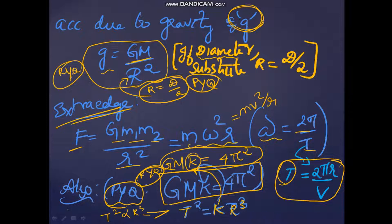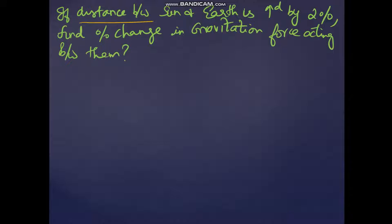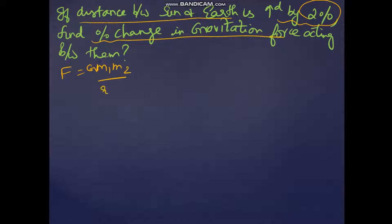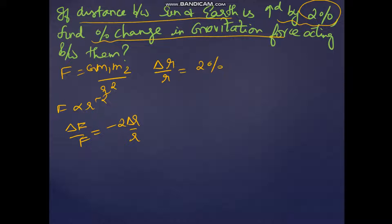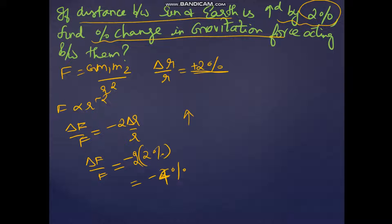Example: if the distance between the Sun and Earth is increased by 2%, find the percentage change in gravitational force. F = Gm1m2/r², so F ∝ r⁻², giving ΔF/F = −2 · (Δr/r). Here Δr/r = +2%, so ΔF/F = −2 × 2% = −4%. As the distance increases by 2%, the gravitational force decreases by 4%, indicated by the negative sign.